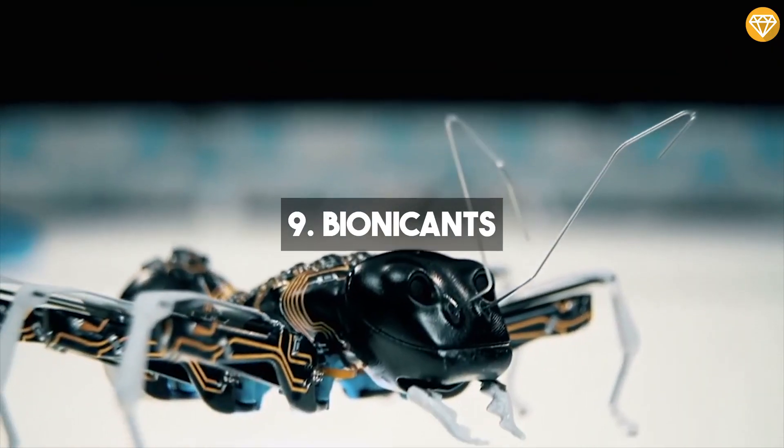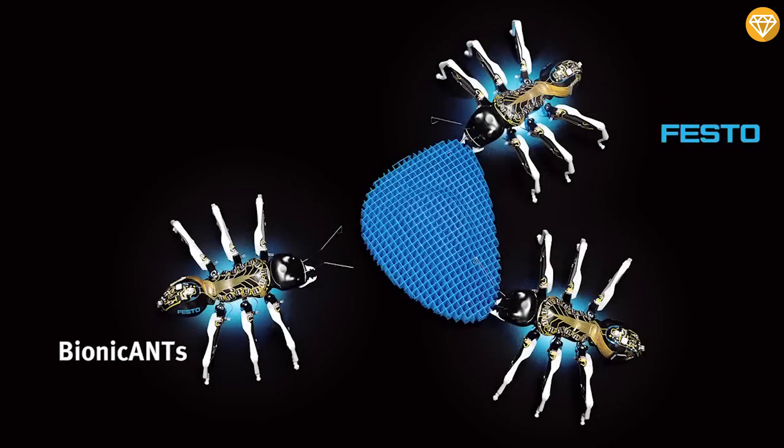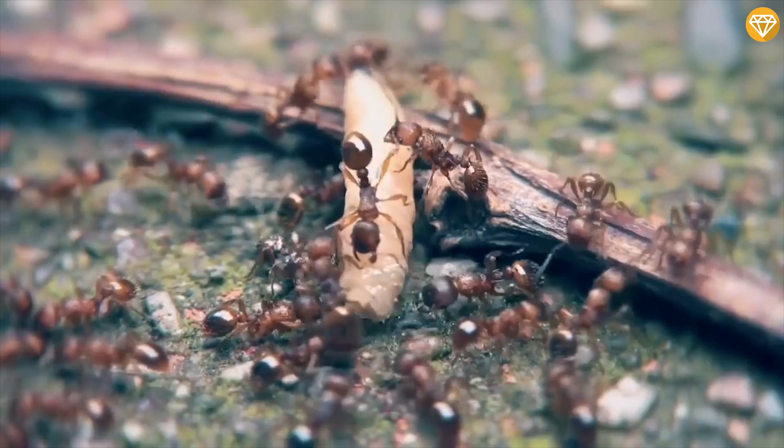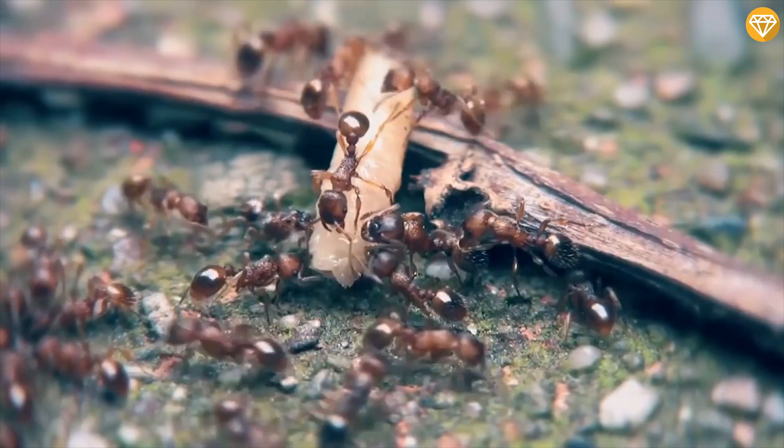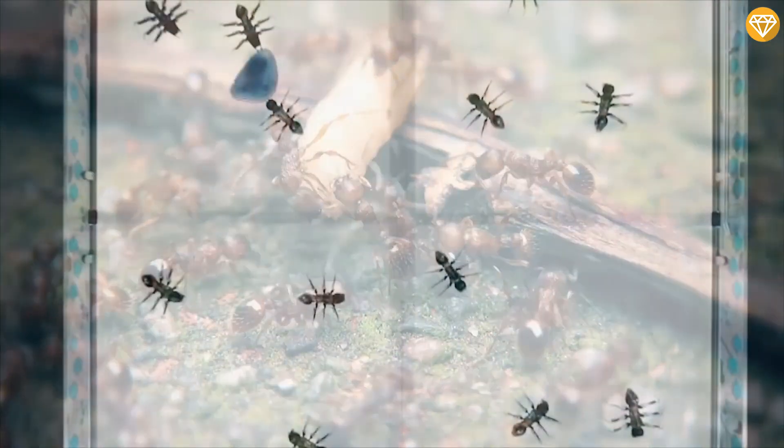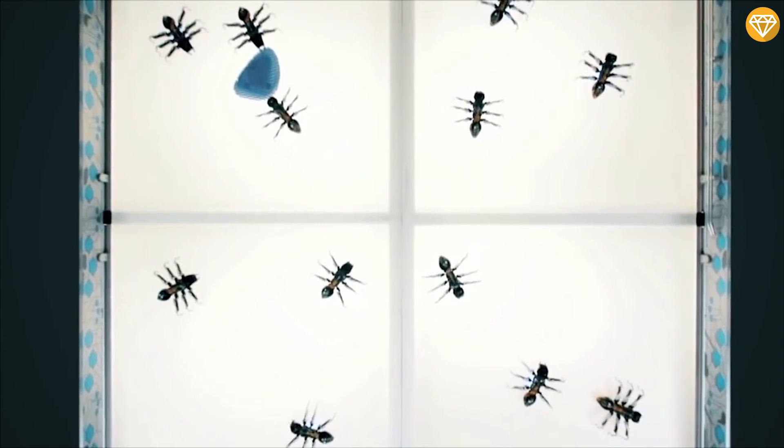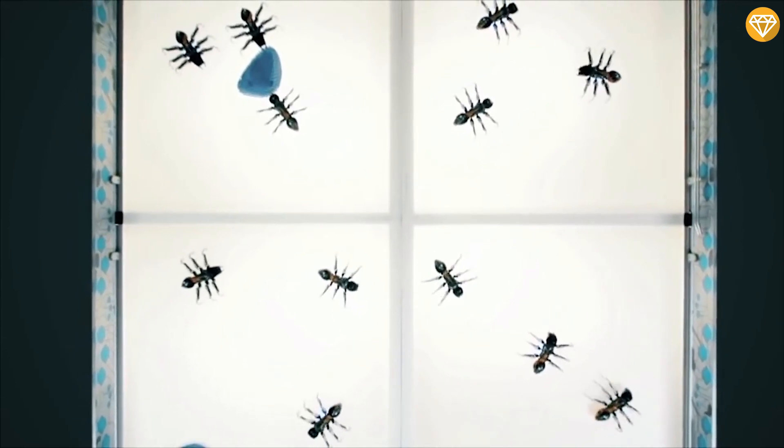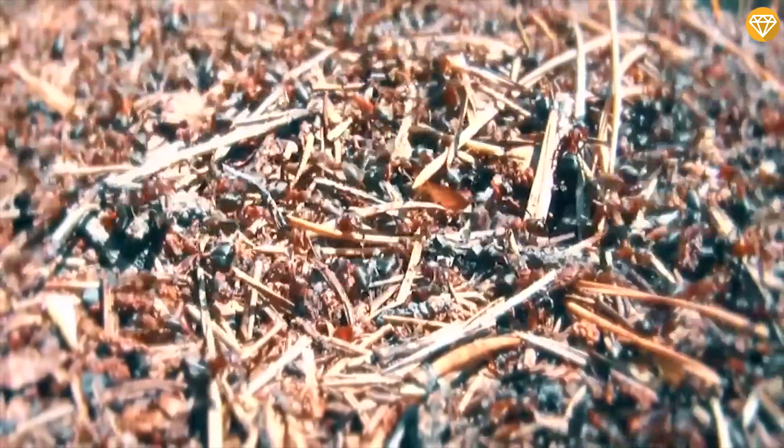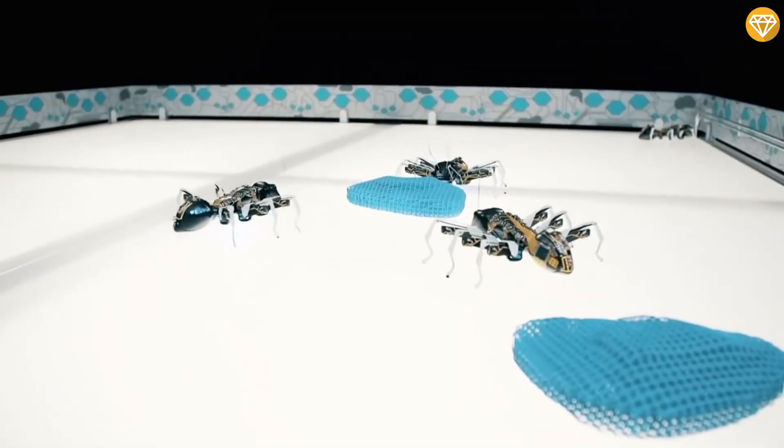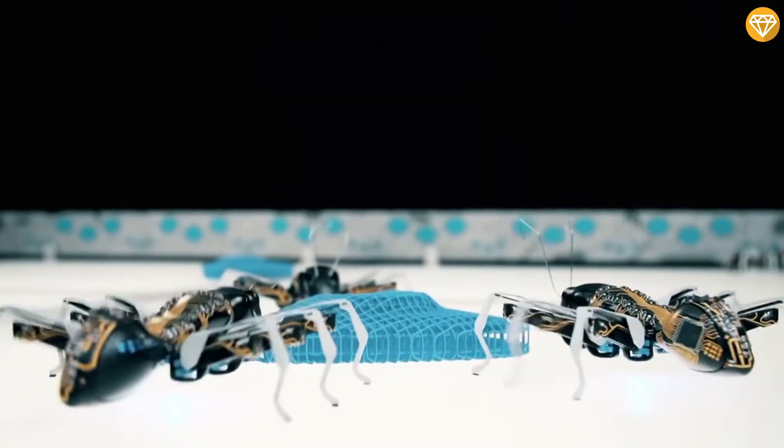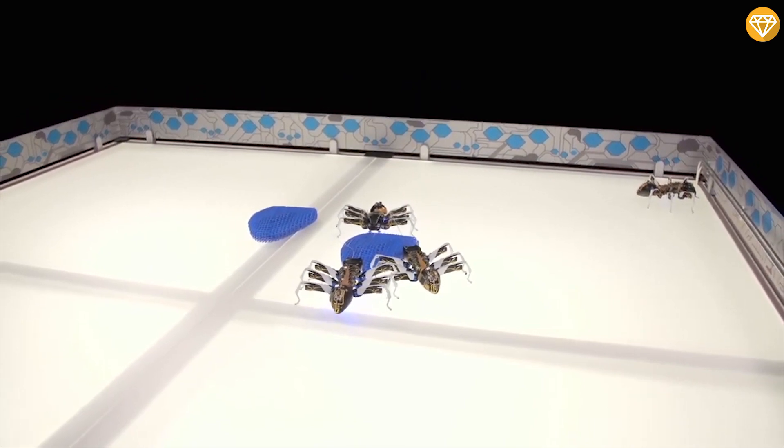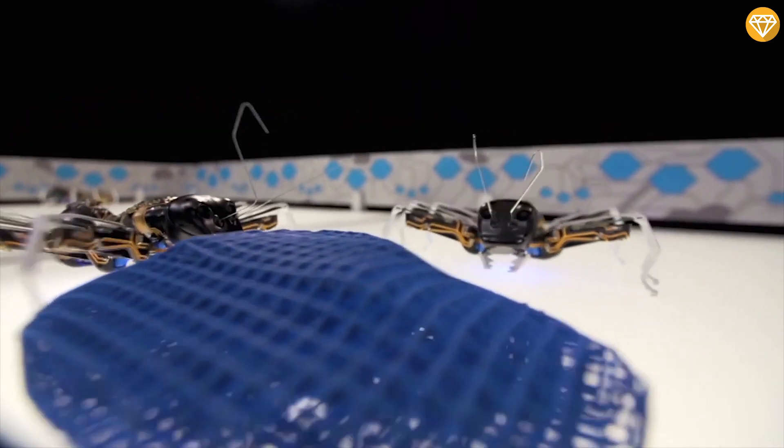Number 9, Bionic ANTs. Bionic ANTs are a fascinating example of cooperative behavior inspired by nature, drawing inspiration from the hierarchical structure and teamwork of real ants. These small robots demonstrate how autonomous components can work together as network systems to solve complex tasks, showcasing the potential of intelligent subsystems for future production systems.